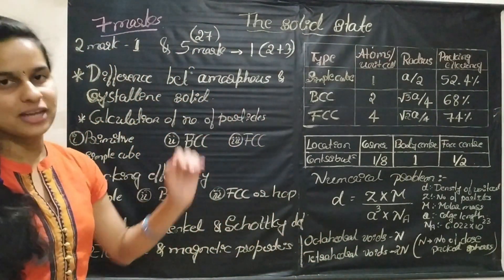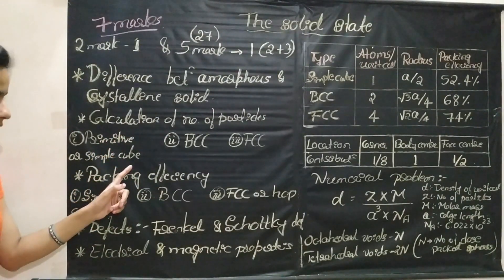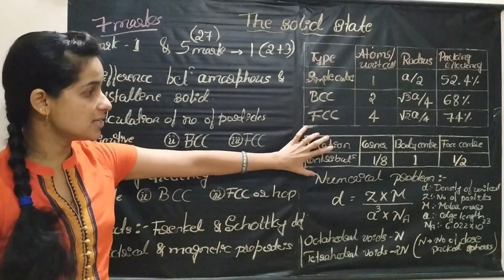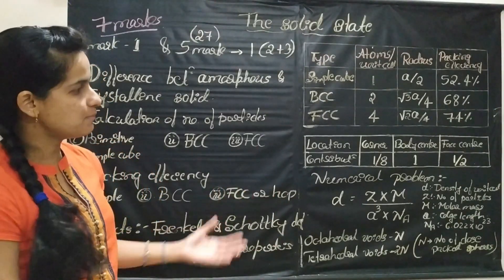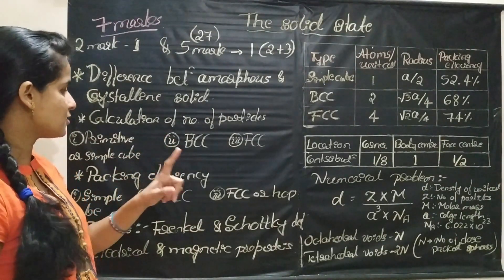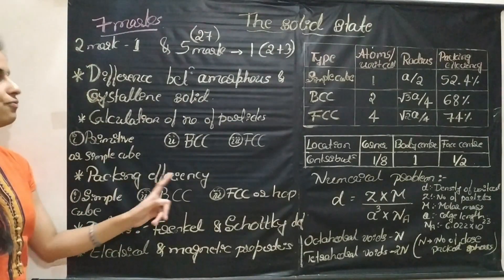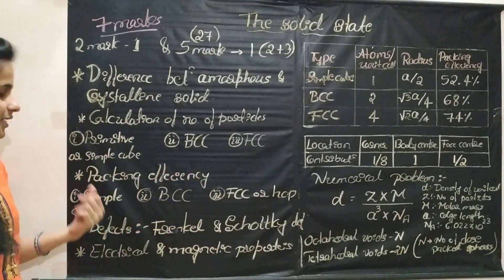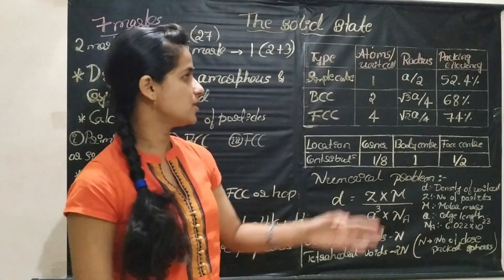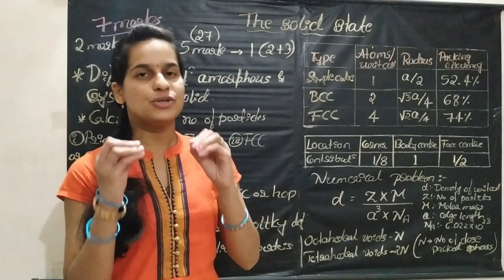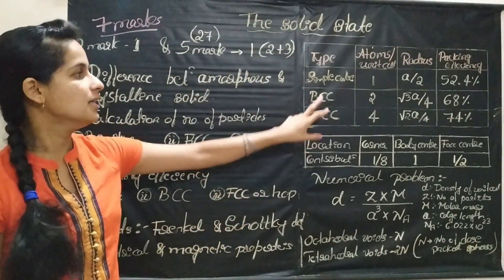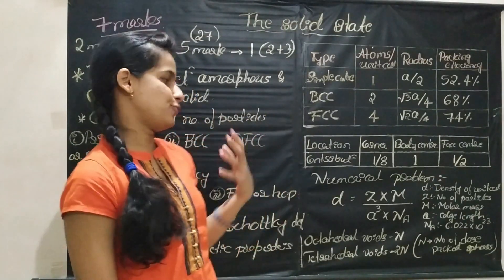Then, calculation of number of particles in primitive or simple cube, BCC, and FCC. For calculation of number of particles in the unit cell, this table is very helpful for you. Then, calculation of packing efficiency — packing efficiency in case of simple cube, BCC, and FCC or HCP is very very important. These two tables are very helpful for you.